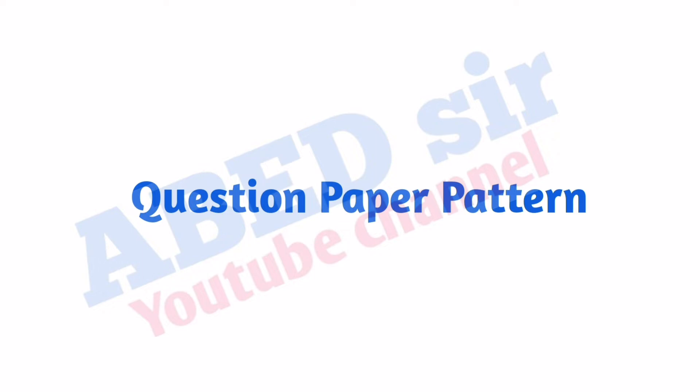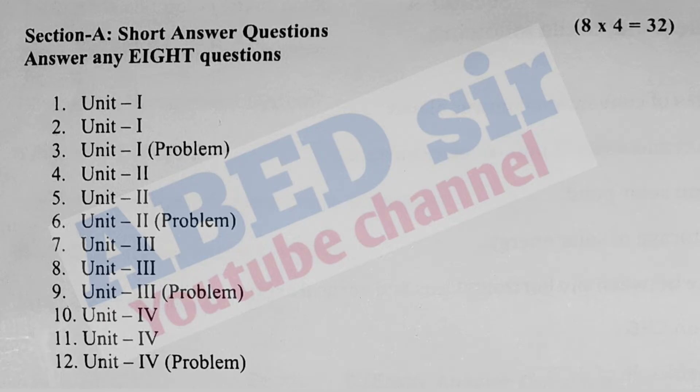This question paper has two parts, part A and part B. In part A, short questions will be asked. Total 12 questions will be asked, three questions from each unit. You have to answer any 8 and each one carries 4 marks. So 8 times 4, 32 marks you will get from part A.